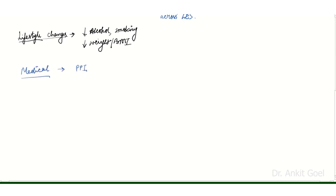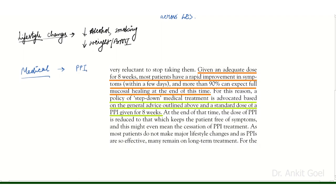The proton pump inhibitors are the mainstay of treatment in GERD. If given for 8 weeks, there is rapid improvement in symptoms and more than 90% of patients can expect full mucosal healing. If the patient has done adequate lifestyle changes, then the dose of PPI can be stepped down after 8 weeks to a dose till the patient is free of symptoms. But most patients do not make major lifestyle changes, and so the PPIs have to be continued long term.